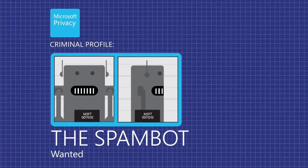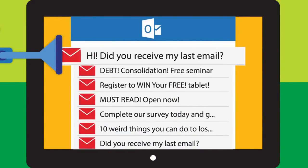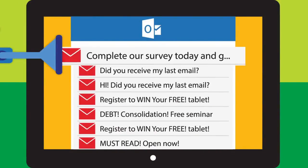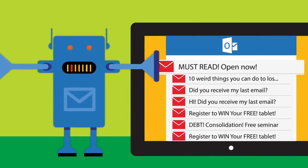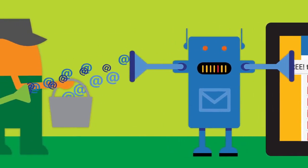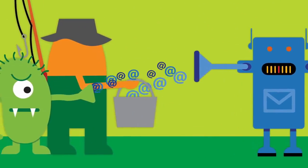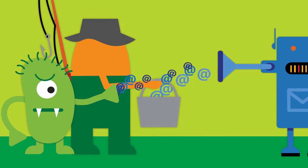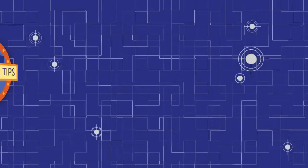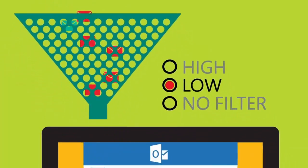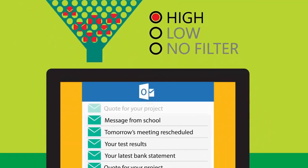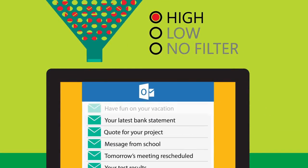Profile: the spam bot. Wanted for public nuisance. Fills inboxes with unwanted email messages. Costs time, money and resources. Frequently associated with the virus and the fisherman. Defense tips: Set the spam filters in your email service to high.